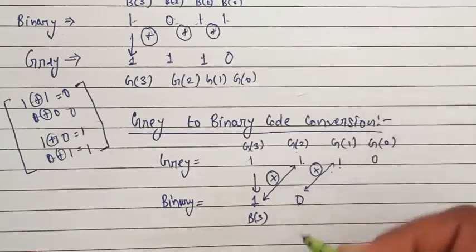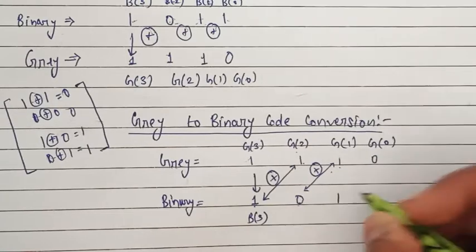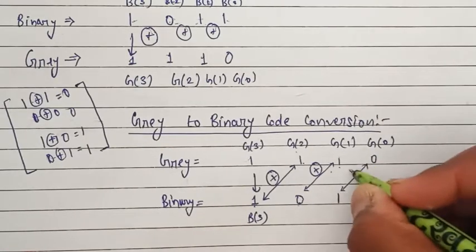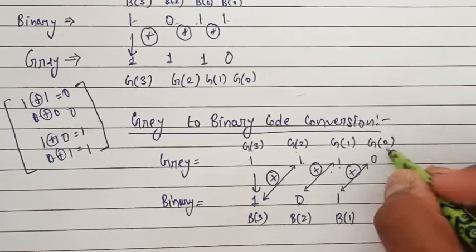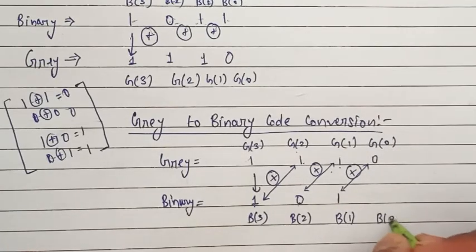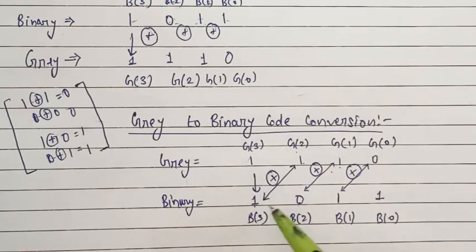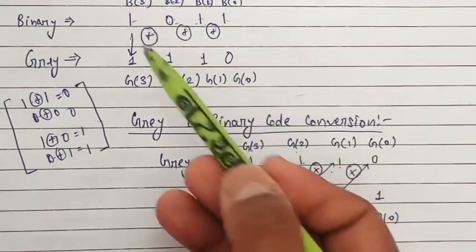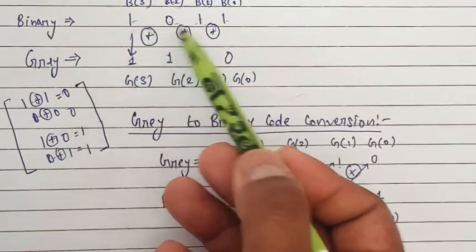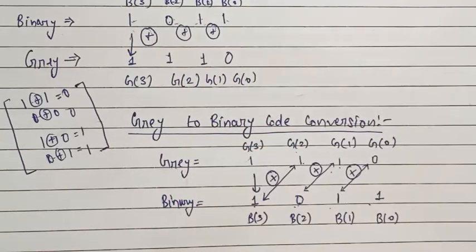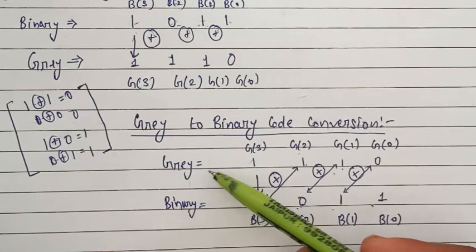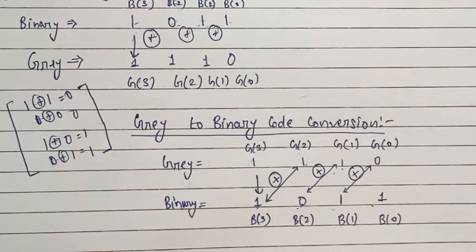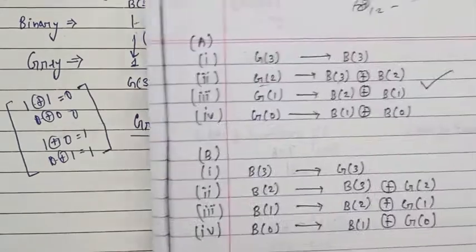For b1, you XOR b2 and g1 — the two values differ, so the answer is 1. For b0, you XOR b1 and g0, giving 1. The answer is 1011, and our original binary was 1011, so we have cross-checked that our answer is right.